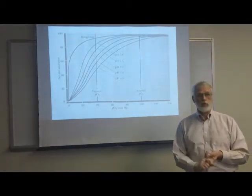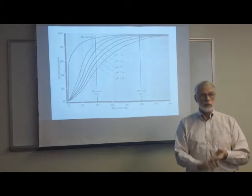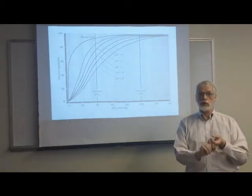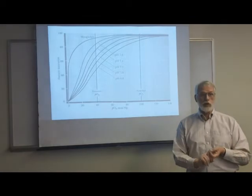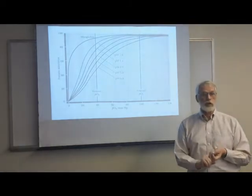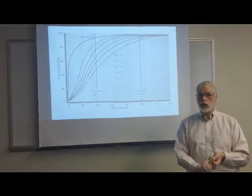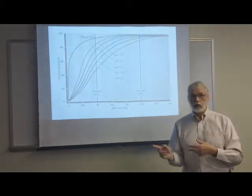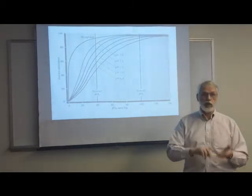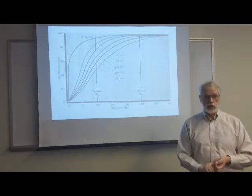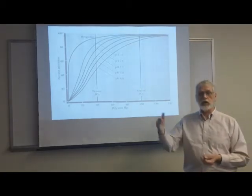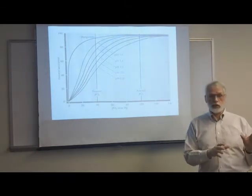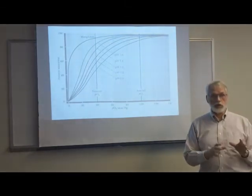When you stabilize the deoxy form, you decrease the oxygen affinity. If I decrease the oxygen affinity, the curve is going to shift to the right, which means the P50 has to increase. So both the indirect and direct effects end up with the same dominoes — the difference is how they get started.